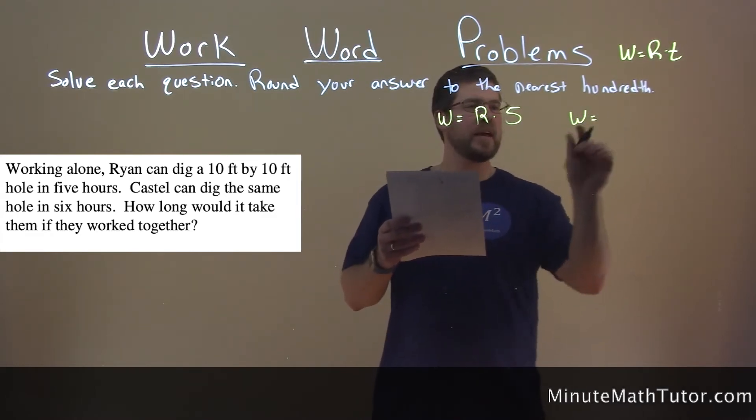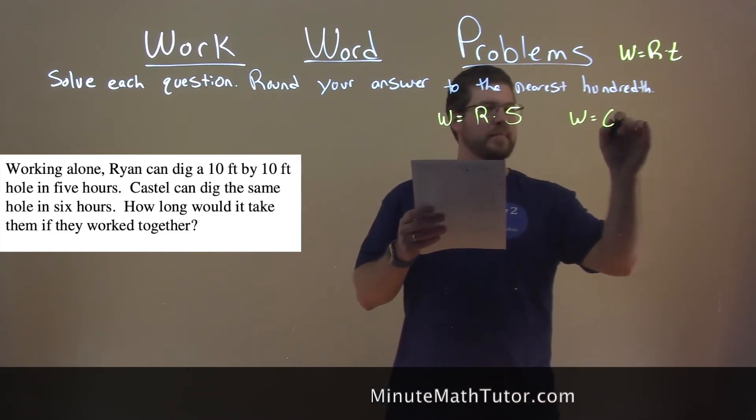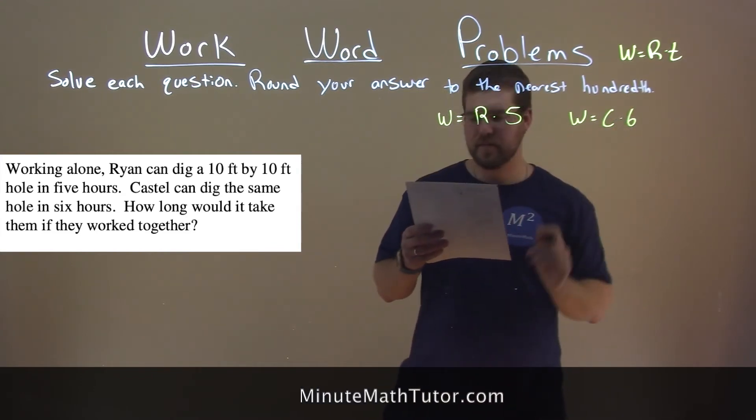Castle can dig the same hole, the same work that is done, in six hours. So we have Castle's rate times six hours, and C stands for Castle's rate.